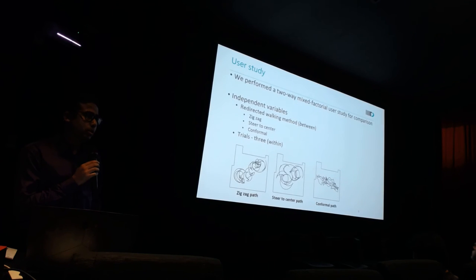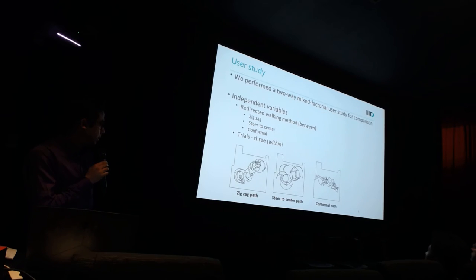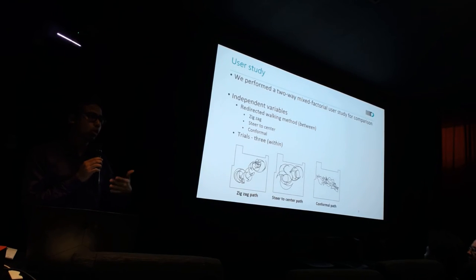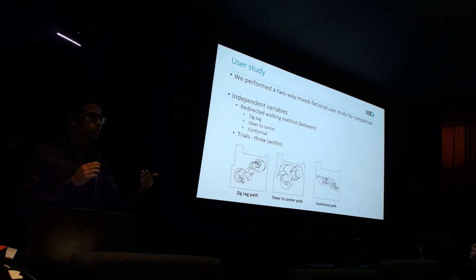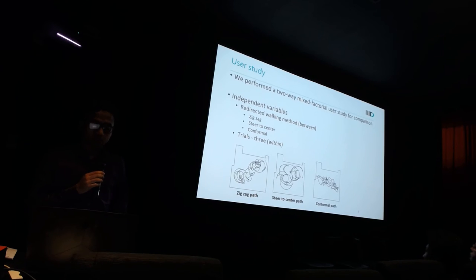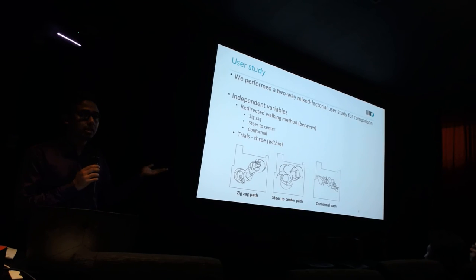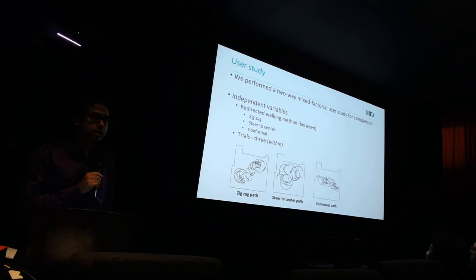We now move on to the study. What we did is use our method and compare it to other methods called zigzag and steer-to-center. The zigzag method basically has the system tell you to walk towards a particular wall in the physical space, whereas the steer-to-center method, designed for bigger physical spaces, wants you to move towards the center of the space. Our conformal path method allowed free movement. It was a between-subject variable, and the within-subject variable was trial — each participant did three trials using the same walking method.